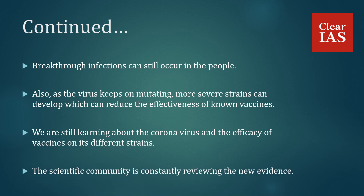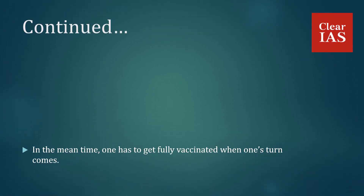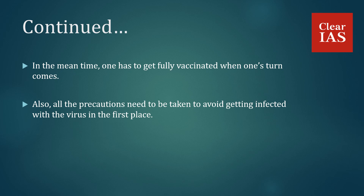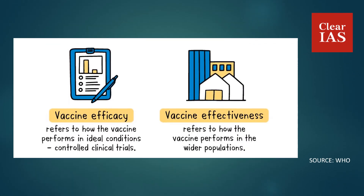We are still learning about the coronavirus and the efficacy of vaccines on its different strains. The scientific community is constantly reviewing new evidence. In the meantime, one has to get fully vaccinated when their turn comes, and all precautions need to be taken to avoid getting infected in the first place. Vaccine efficacy refers to how the vaccine performs in ideal conditions, i.e., controlled clinical trials, whereas vaccine effectiveness refers to how the vaccine performs in wider populations, i.e., in real-life scenarios.